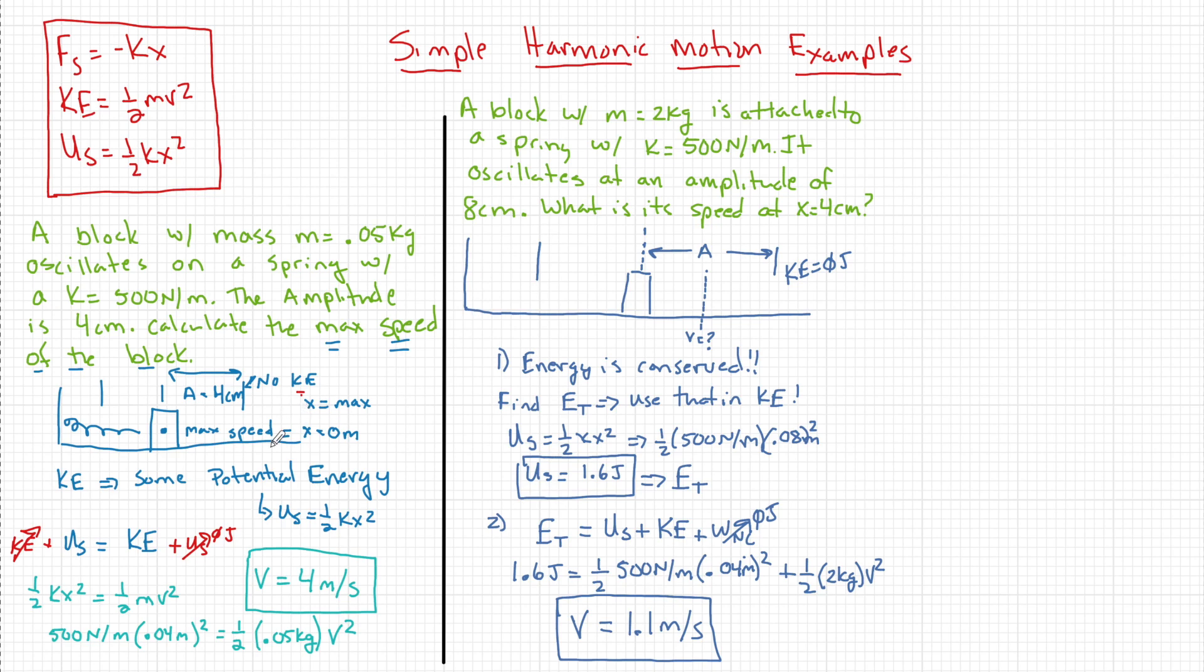So in the first example, we found the energy at any point, the maximums and the min, that's the most easy to deal with. But if we know that, and we know that energy is conserved, we can find one of those max or min energies, and then we could apply it to any energy total at any point in the system.